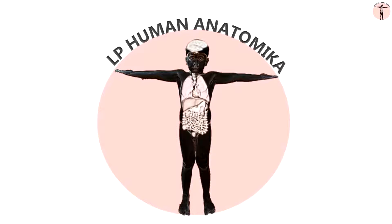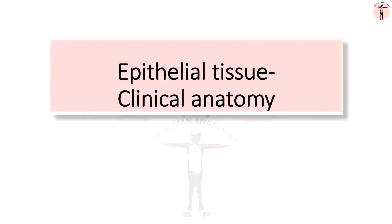Welcome back. In the previous session, we discussed epithelial junctions, which included tight junctions, gap junctions, and three types of anchoring junctions: zonula adherens, desmosome, and hemidesmosome. In this session, we will now discuss the clinical anatomy of epithelial tissue.